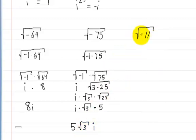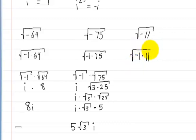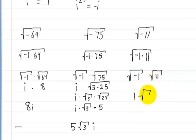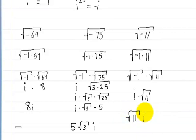The square root of negative 11 is pretty cut and dry. It's just the square root of negative 1 times 11. Separate them, and you get i times the square root of 11, written as i√11.